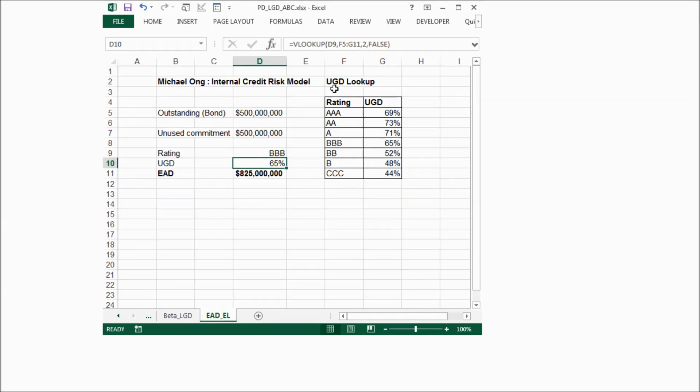In order to calculate EAD, we need to decide UGD first. We can get this UGD lookup table from a commercial company or from our past historical data. On the left side is the rating of the company. On the right side is the UGD.